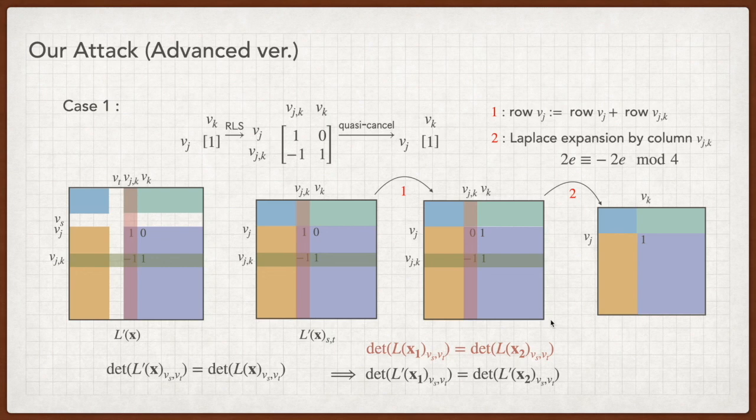Computing the VJK, VJK minor means computing determinant after deleting row VJK and column VJK. Up to now, we delete the intermediate node VJK as well as recover the value of entry. We can perform similar operations on every intermediate node. As a result, we conclude that the Vs Vt minor of L prime is equal to Vs Vt minor of L. That is to say, RLS does not change the value of this minor. Thus, the equality of VJ, VK minor of L implies the equality of VJ, VK minor of L prime.